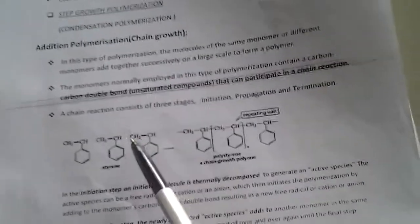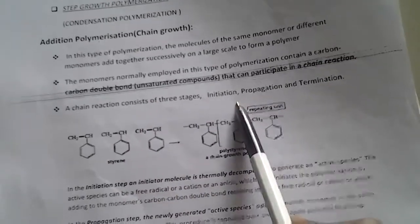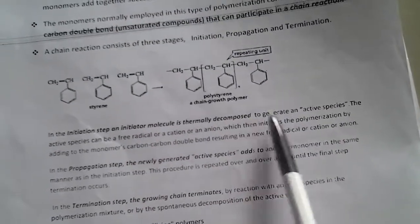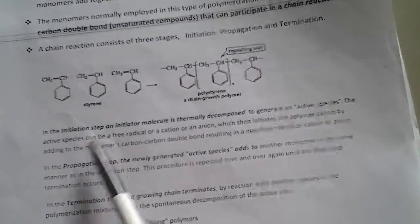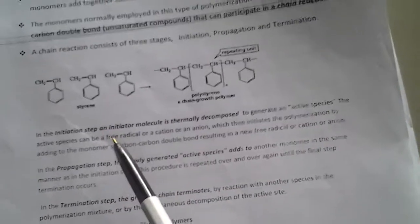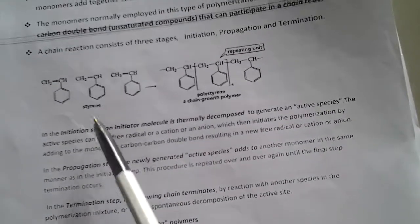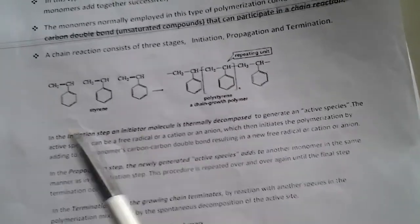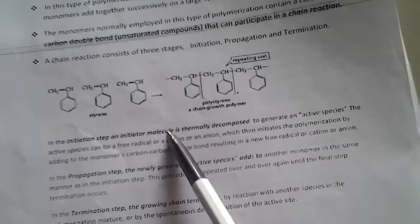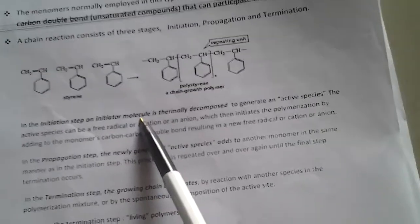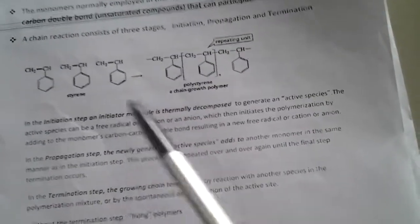Generally, any chain reaction contains three stages: initiation, propagation, and termination. In the initiation step, an initiator molecule is thermally decomposed to generate an active species. The active species can be a free radical, a cation, or an anion. This initiator molecule — the starting molecule — is called the active species, and it initiates the chain reaction.